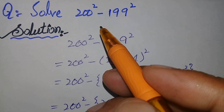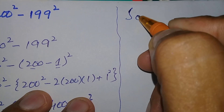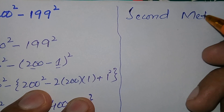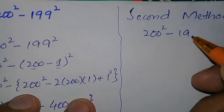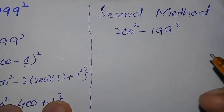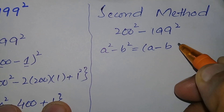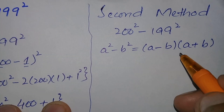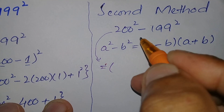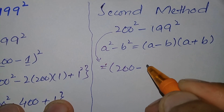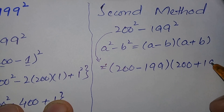Now we will try the second method to solve this question. The question is 200 square minus 199 square. Here we will use the algebraic identity: a square minus b square is equal to a minus b times a plus b. Using this identity, we can write the expression as (200 minus 199) times (200 plus 199).